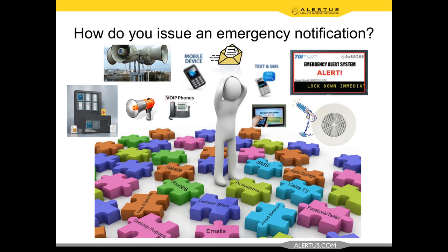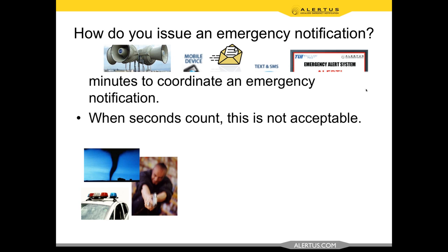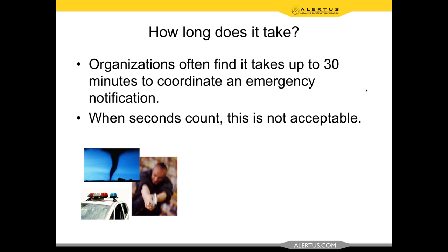There are a lot of assets — how do you bring them all together? Alertus provides a console for activating a unified notification, and interfaces with all these different systems: text and email services, digital signage and cable TV, fire alarms, outdoor giant voice, VoIP phones, and more. We're able to activate and control those elements in an emergency very quickly and efficiently.